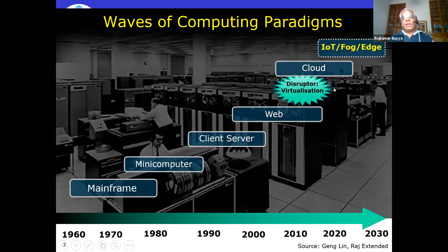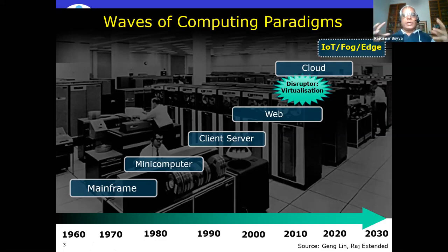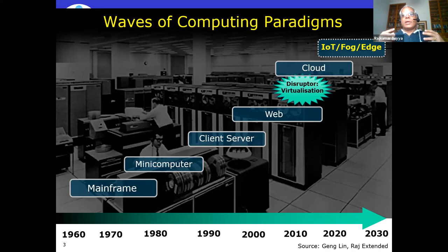Internet of Things extends the concept from networks of computers to networks of everything. With IoT becoming very popular, the current model of computing faces challenges in supporting it, which is why we now have a new model called fog and edge computing. Edge computing and fog computing are more recent innovations, rapidly emerging. There are open issues and challenges, and opportunities to explore smart environments created using Internet of Things.